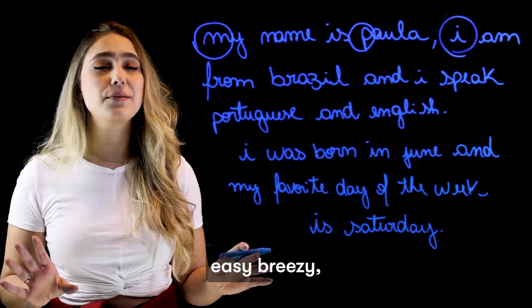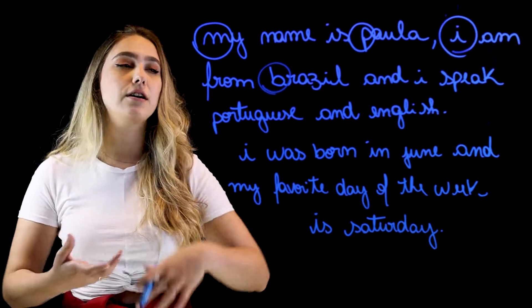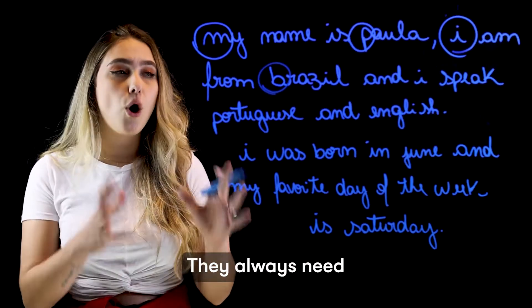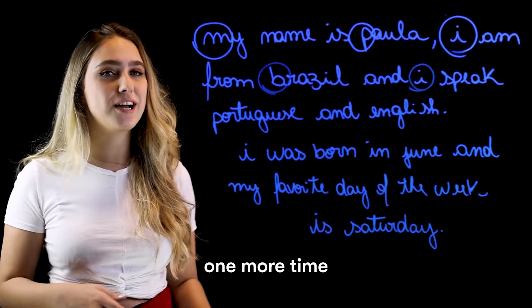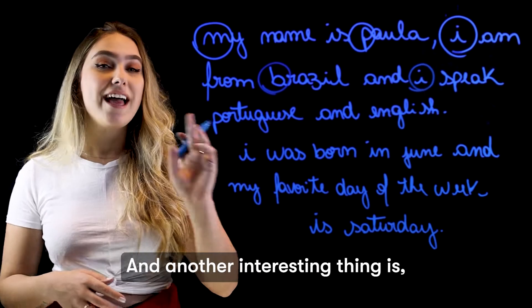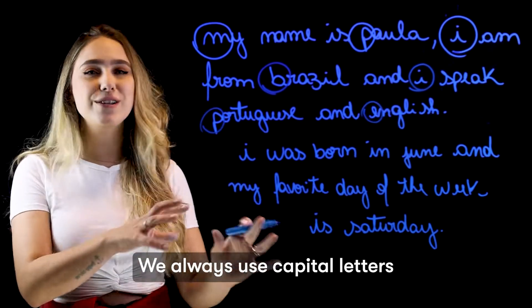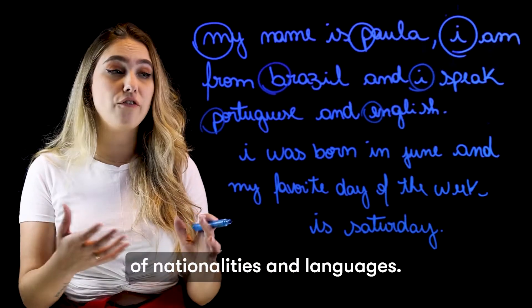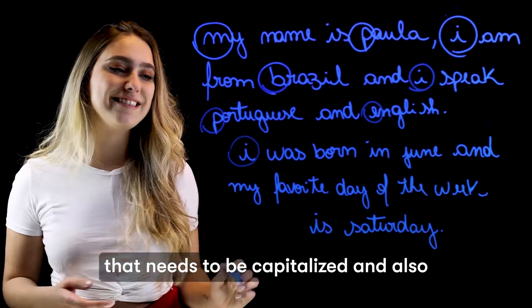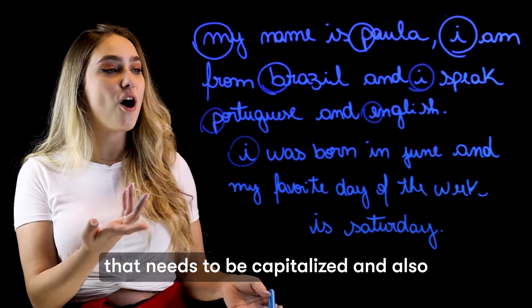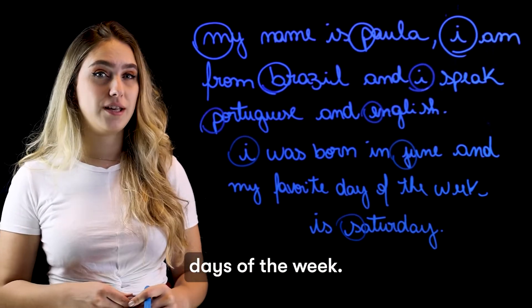Next one — easy breezy. Brazil. Places and names such as cities, states, countries, things like that, they always need a capital letter at the beginning. And another interesting thing: Portuguese and English. We always use capital letters at the beginning of nationalities and languages. Here we have another 'I' that needs to be capitalized, and also months of the year and days of the week.